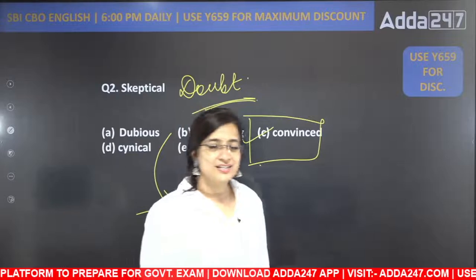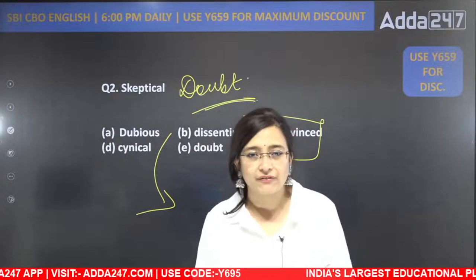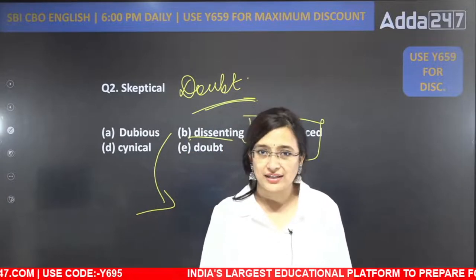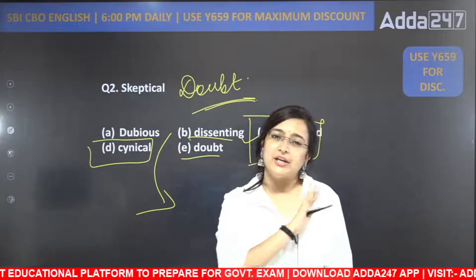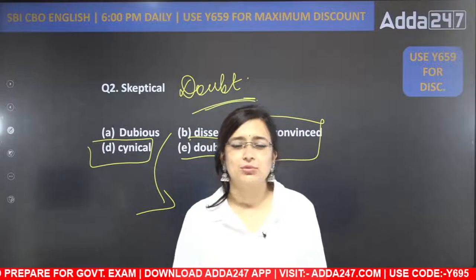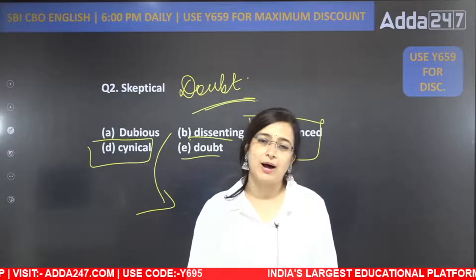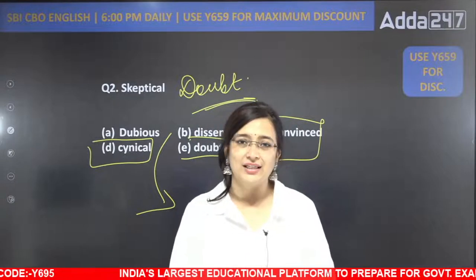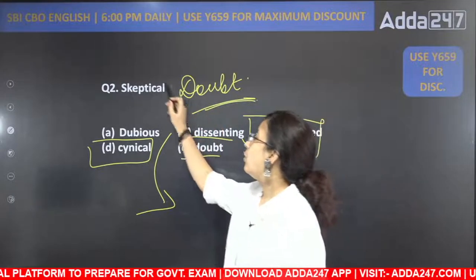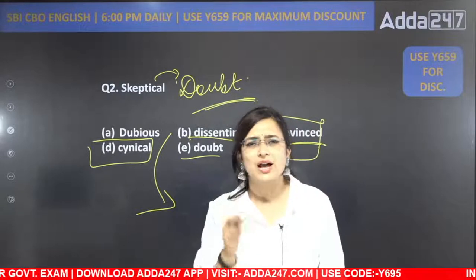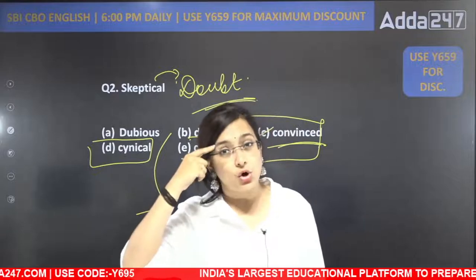Dissenting ka meaning hota hai jab aap kisi bhi cheez ke khilaaf hain — when you are against anything, that is called dissenting. Cynical — another very good word that has been repeatedly used in all the bank exams. Cynical ka matlab hota hai aisa vision of life jismein aap humesha negative perspective ko saamne rakhein baar baar — that person will be called cynical. So, skeptical means doubtful, cynical means a negative person. Skeptical ka ulta hoga convinced — jis ko bilkul bhi doubt na ho, jiska vision bilkul clear ho, jiska aim clear ho — that person is convinced with his own decision.